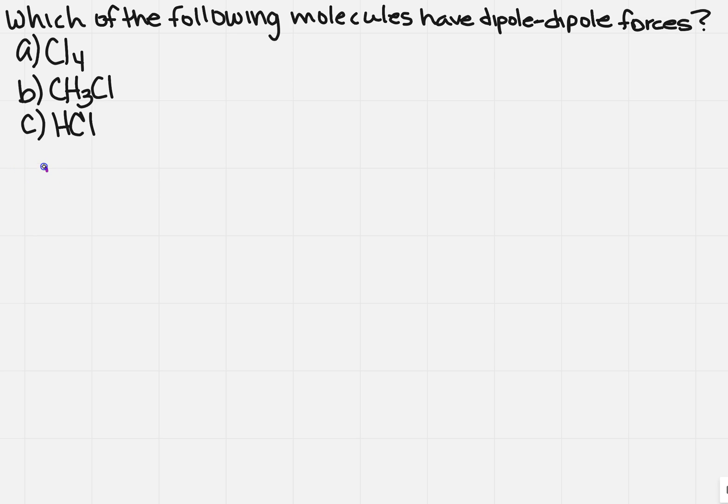So, if I look at A, I've got Cl4, which just means that I have four Cls. Well, when I look at that, I know that Cl can sometimes have the expanded octet as well, and so this right here, I have to know, is it polar or is it not polar?